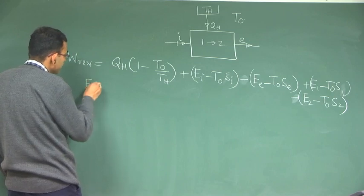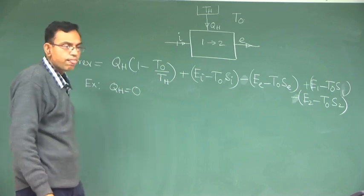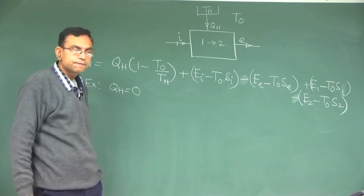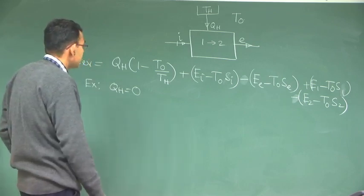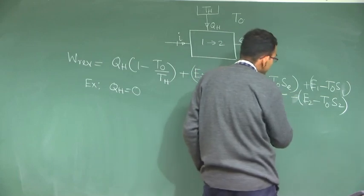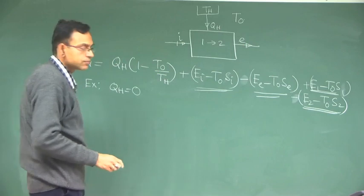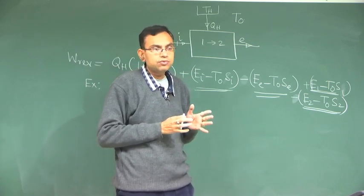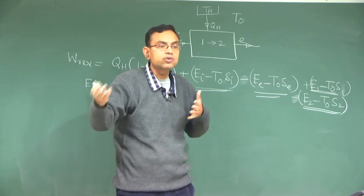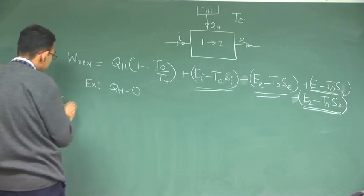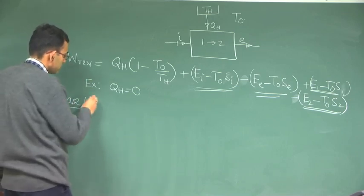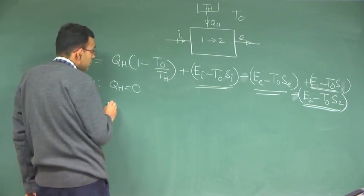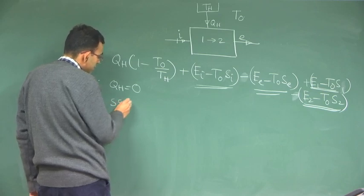Let us consider an example with Q_h equal to 0. If Q_h equals 0, we are focusing on reversible work solely exploited due to the change of state. In this case, you will have reversible work represented by these terms. We will isolate two perspectives: one is a control mass system, another is control volume. Case 1 that we will consider is a steady state steady flow process.